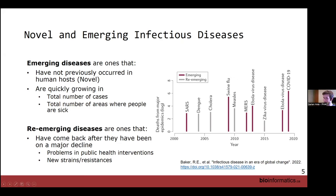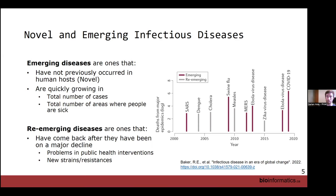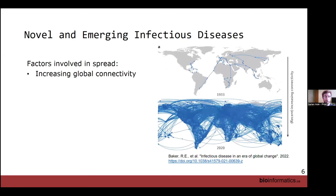A third example, labeled as both emerging and re-emerging depending on the paper, is Zika virus. Zika was first reported in Uganda in the 1940s and 50s, and then an outbreak happened in 2014–2015 where it was introduced to North and South American populations. So again, diseases can either emerge to new populations or re-emerge due to something changing.